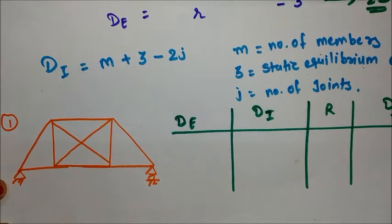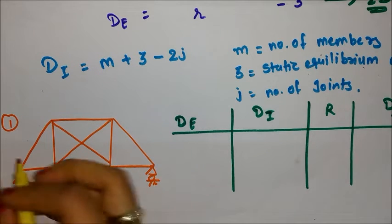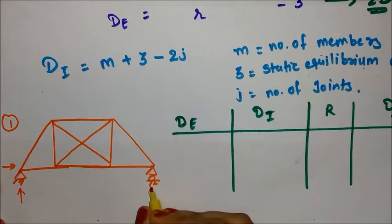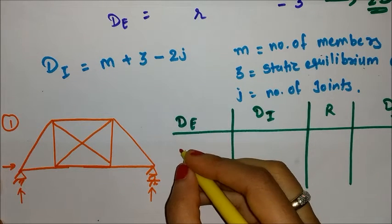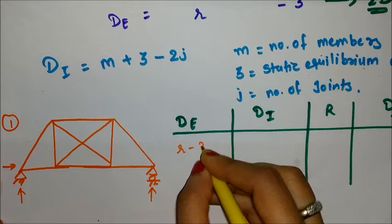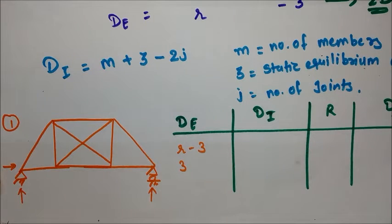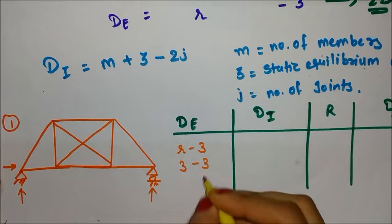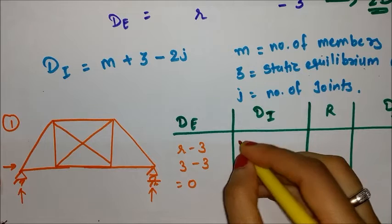Let me draw the first truss. You can see this truss diagram. Now let's calculate DE as the external indeterminacy. You can see I have provided a hinge at one side and a roller at the other side. The hinge will give you two support reactions and the roller will give you one, so eventually it will be three. So r minus 3 gives three minus three, which is equal to zero.